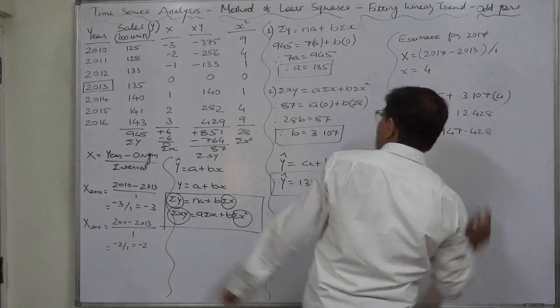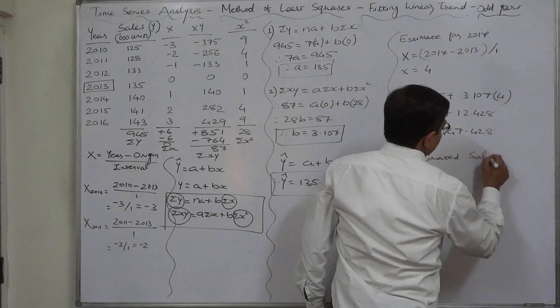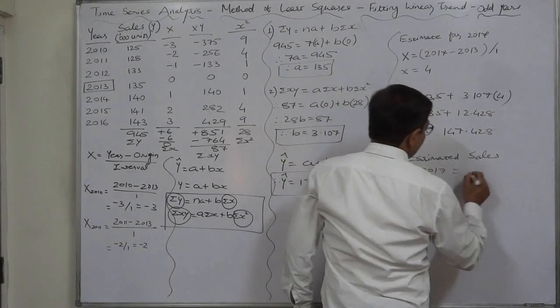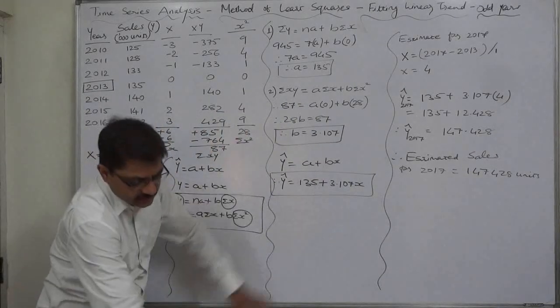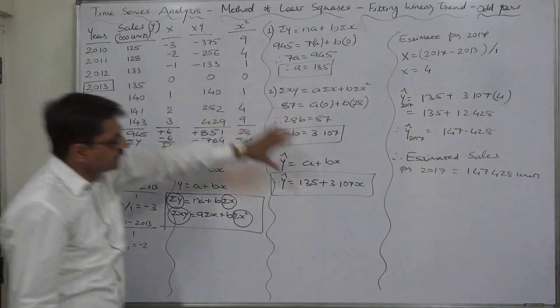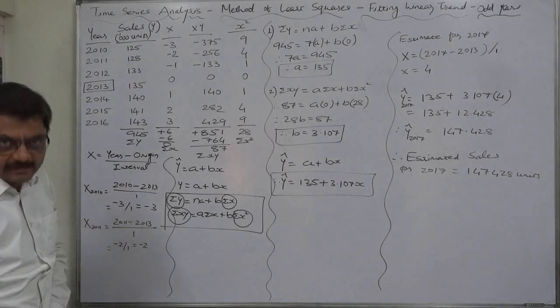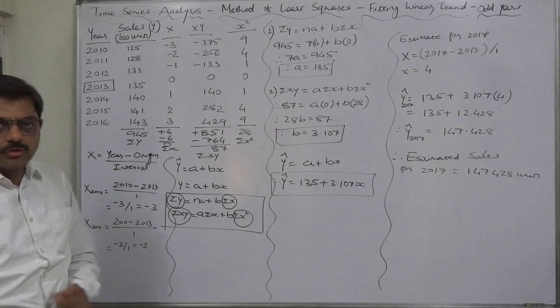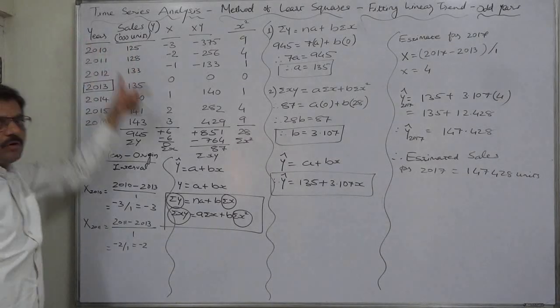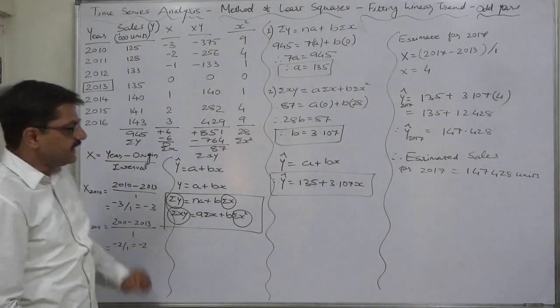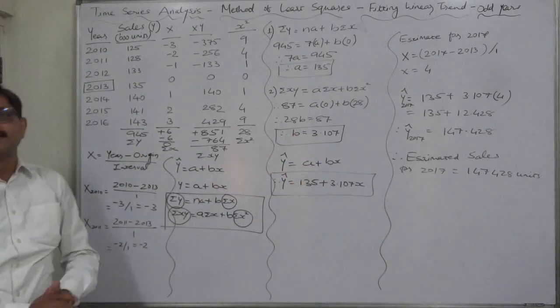That means Y cap for the year 2017 comes to 147.428. As we know that Y is sales in 1000 units, so estimated sales for 2017 comes to 147,428 units. This is the use of the functional relationship between the two variables. If we substitute all these X values into this relationship we can have the estimated value of sales quantity for the years which are part of our time series, and they are known as trend values. Trend value means the estimated value of the dependent variable for the period which is part of our time series. This is now your assignment: find out, substituting all these X values into this relationship, the trend values for all these seven years. That's it, thank you very much.